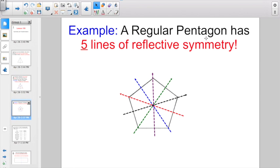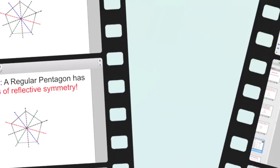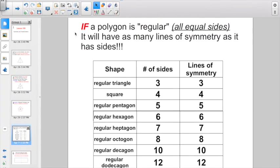Or again, a regular pentagon has five lines of reflective symmetry. Basically, if a polygon is regular, all equal sides, it will have as many lines of symmetry as it has sides.